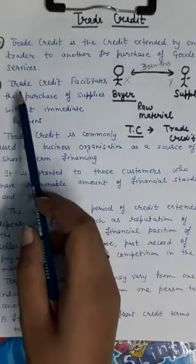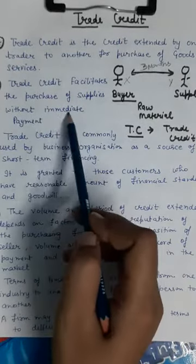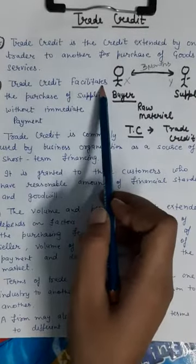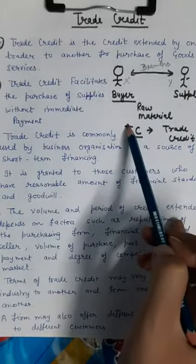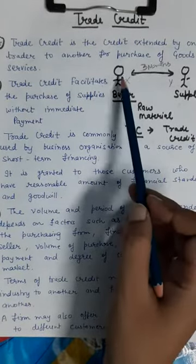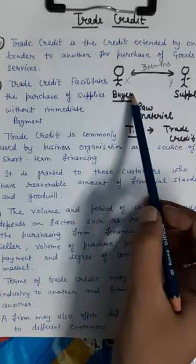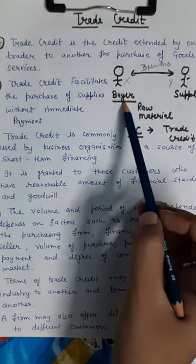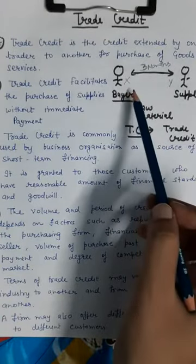Trade credit facilitates the purchase of supplies without immediate payment. This is an important point — trade credit helps you purchase goods, supplies, and raw materials without immediate payment. If you don't have money right now, you can still receive the goods and pay later. This facility is provided to the buyer without requiring immediate payment.